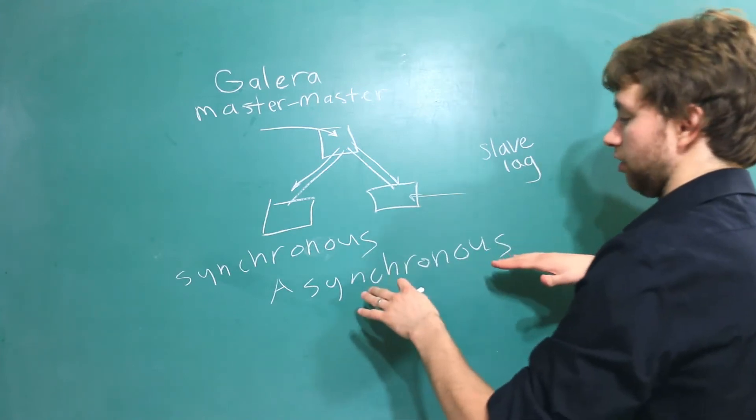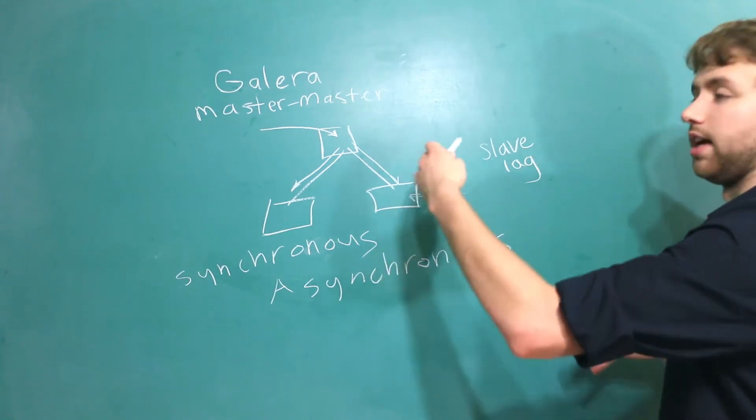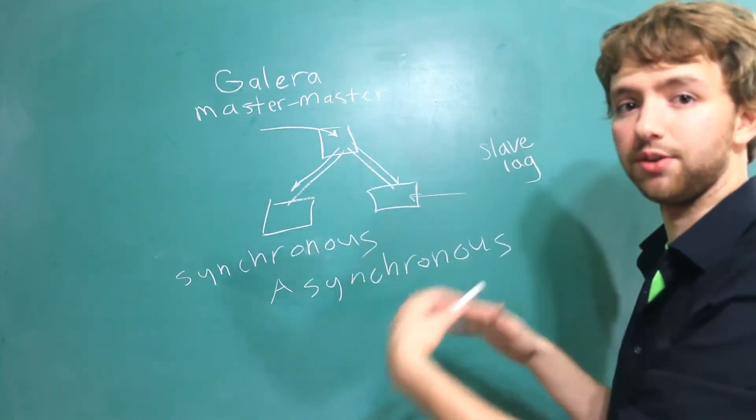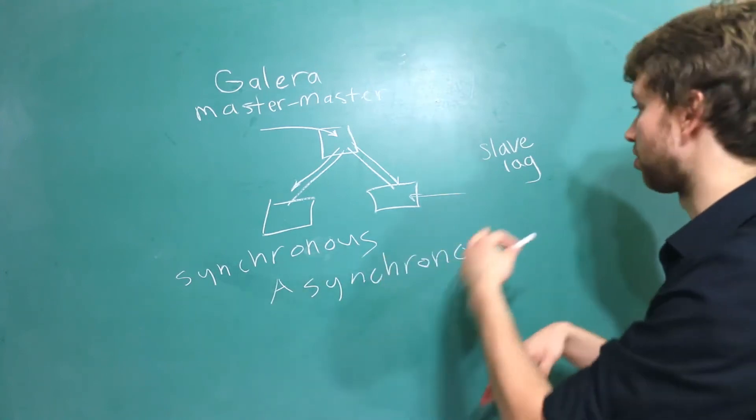So if we're using an asynchronous system we're probably in a master slave system where the data gets replicated from the master down to the slaves and that time difference is called slave lag.